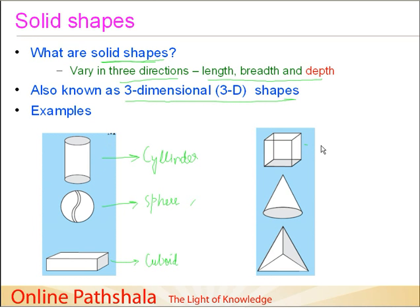Then we have a cube in which all the sides are of equal length. Then this is another shape which we have, cone. The most obvious thing is an ice cream cone. And then we have this shape as well, which is like a kind of pyramid structure. You can call it as a tetrahedron.